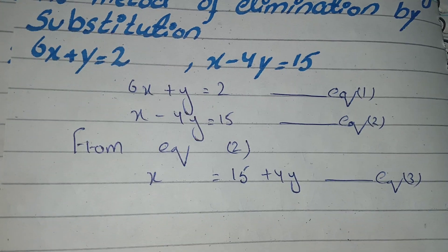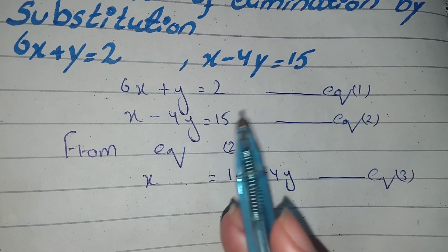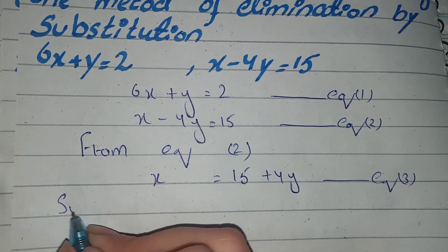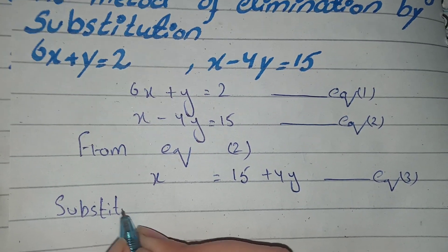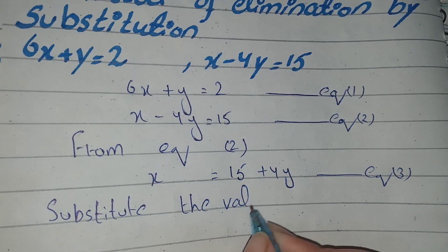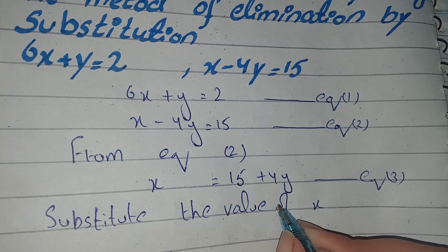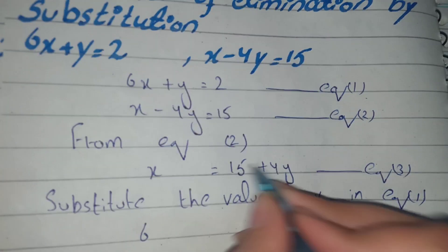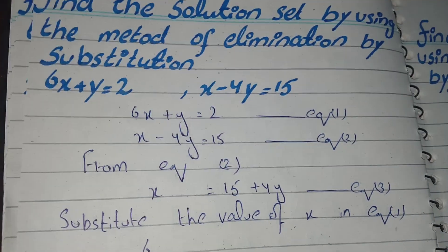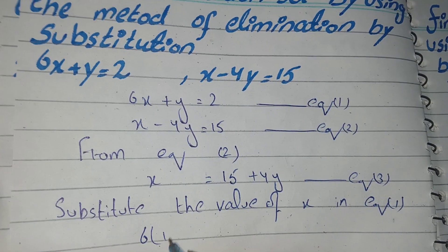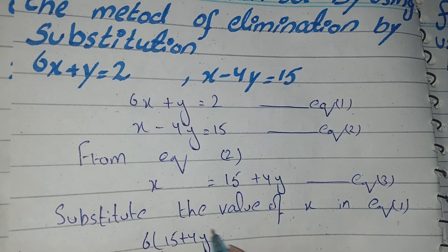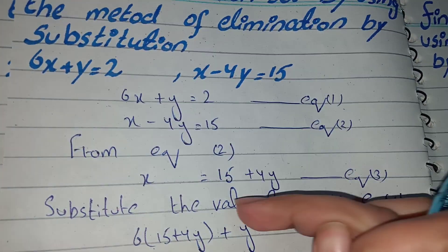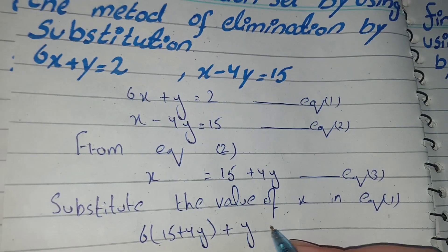Now what will we do? We substitute the value of x in equation 1. Where x is equal to 15 plus 4y, we will put that in equation 1. So we write 6 times (15 plus 4y) plus y is equal to 2.